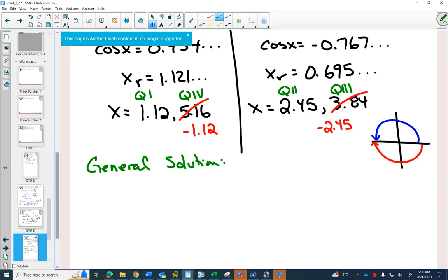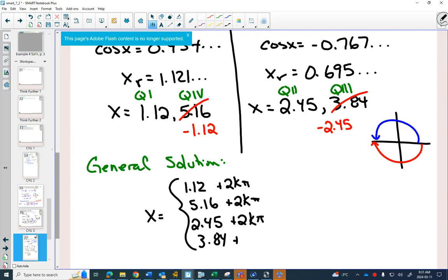I like the answers from 0 to 2π, because I like to write my general solution using those four, so I would put 1.12, 5.16, 2.45, and 3.84 in radians, plus 2kπ, where k belongs to the integers.